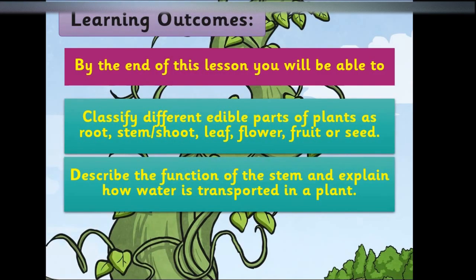By the end of this lesson you will be able to classify different edible parts of plants as root, stem, shoot, leaf, flower, fruit, or seed, and then describe the function of the stem and explain how water is transported in a plant.